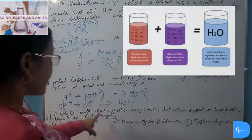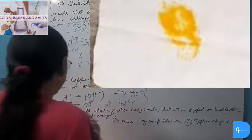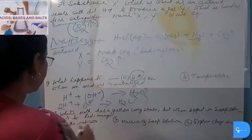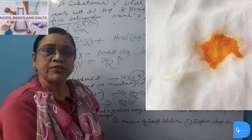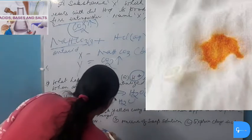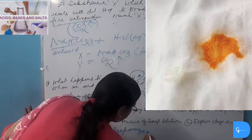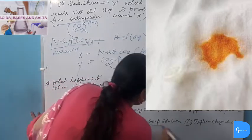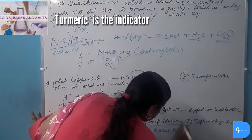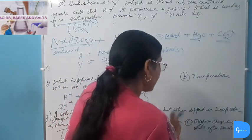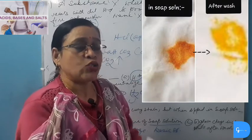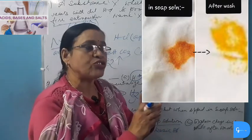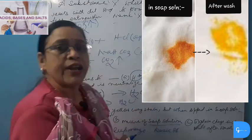A white cloth with a yellow color stain, when dipped in soap solution, changes its color to red-orange. The indicator here is Turmeric — a natural indicator. Its neutral color is yellow and it changes to red-orange (deep orange) in basic/alkaline solution like soap. When the cloth is washed with plenty of water, the soap solution is washed away, the basic solution is removed, and the color changes back to yellow.